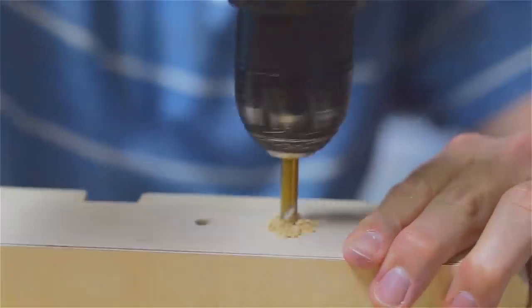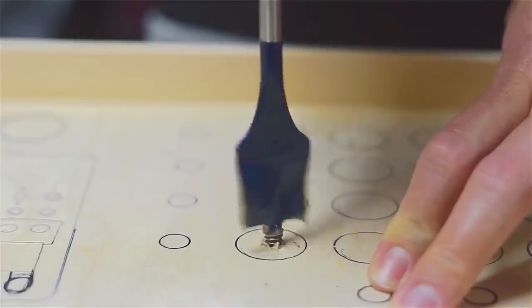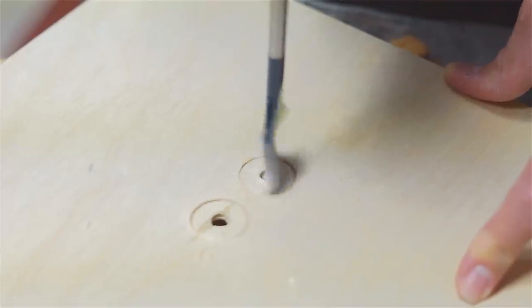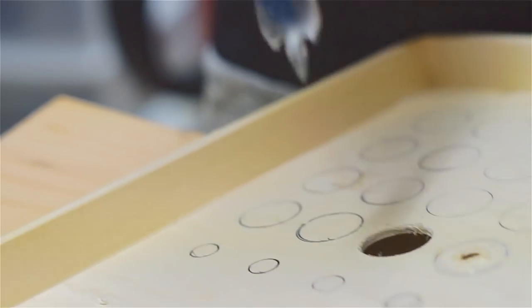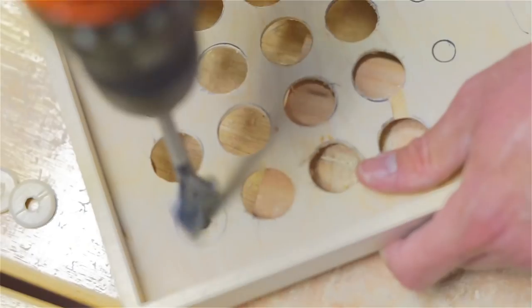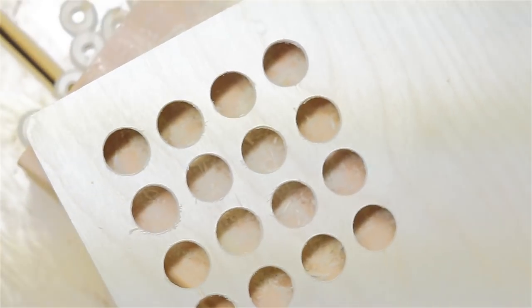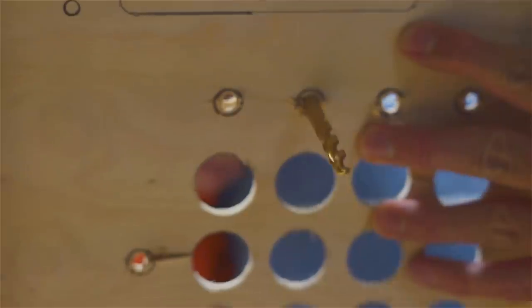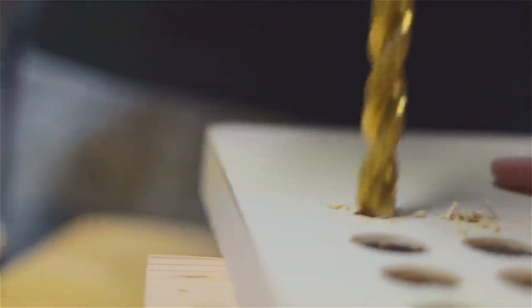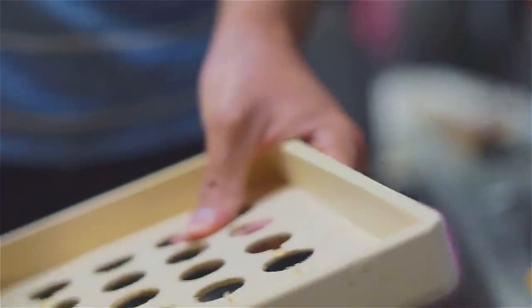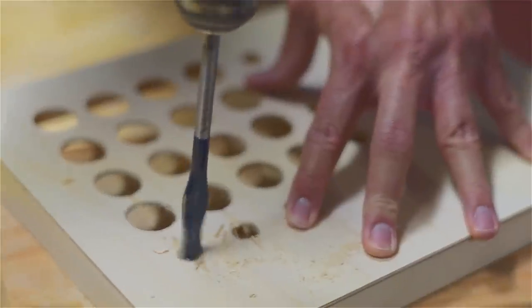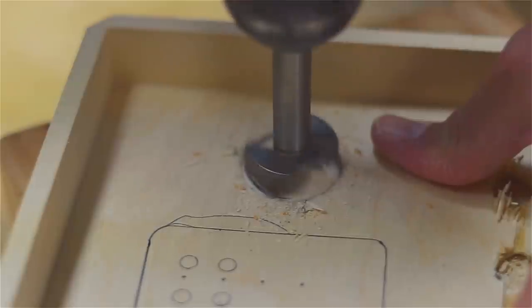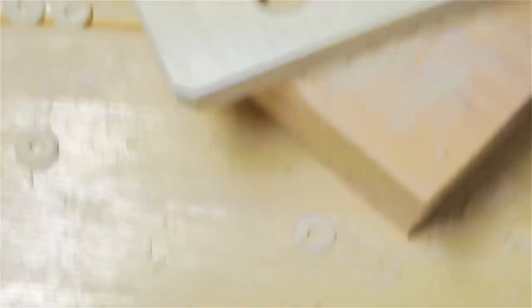Be sure before drilling to double check the size of your inputs, sockets, and components. For the arcade buttons, we use spade bits, but I've also seen that hole saws tend to give a cleaner cut. For this project, we'll be using 16 24mm Sanwa arcade buttons, accompanied by 7 mini arcade buttons and 1 30mm arcade button.